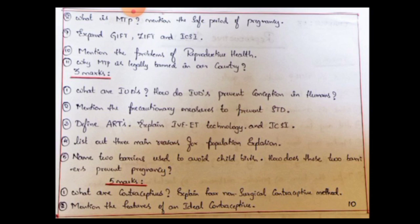3-mark questions: What are IUDs? How do IUDs prevent conception in human beings? IUD stands for intrauterine device. Mention the precautionary measures to prevent STD or STI. Define ART — Assisted Reproductive Technology — including IVF, ET technology, and ICSI. This question will require focused preparation.